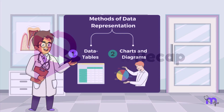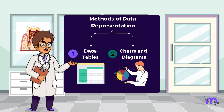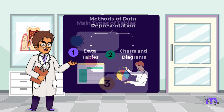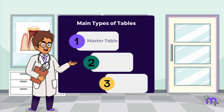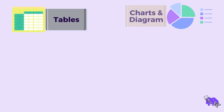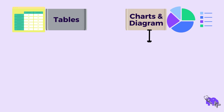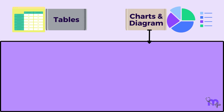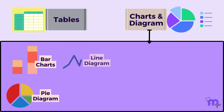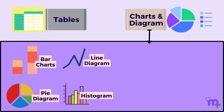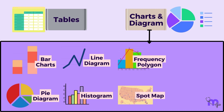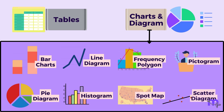To quickly recap, data can be presented with the help of tables and charts. Tables can further be divided into master tables, simple tables, and frequency distribution tables. Charts and diagrams can be of various types, including bar charts, pie charts, line diagrams, histograms, frequency polygons, spot maps, pictograms, and scatter diagrams.